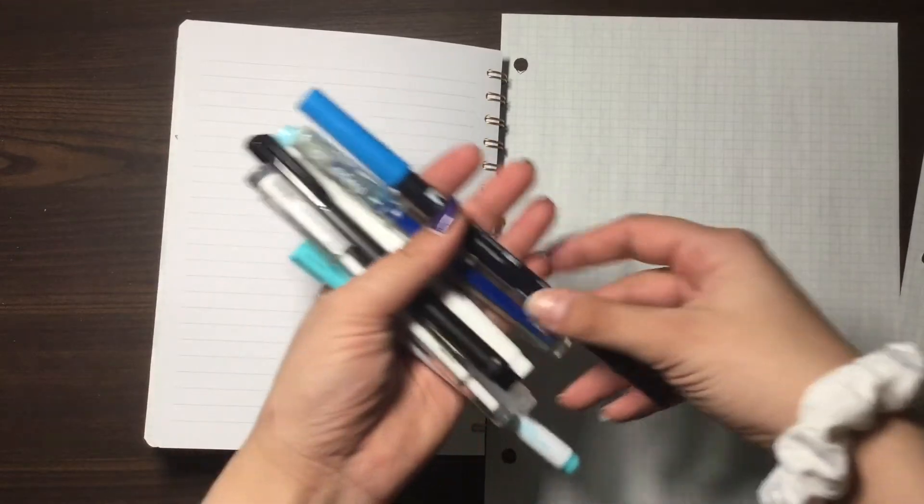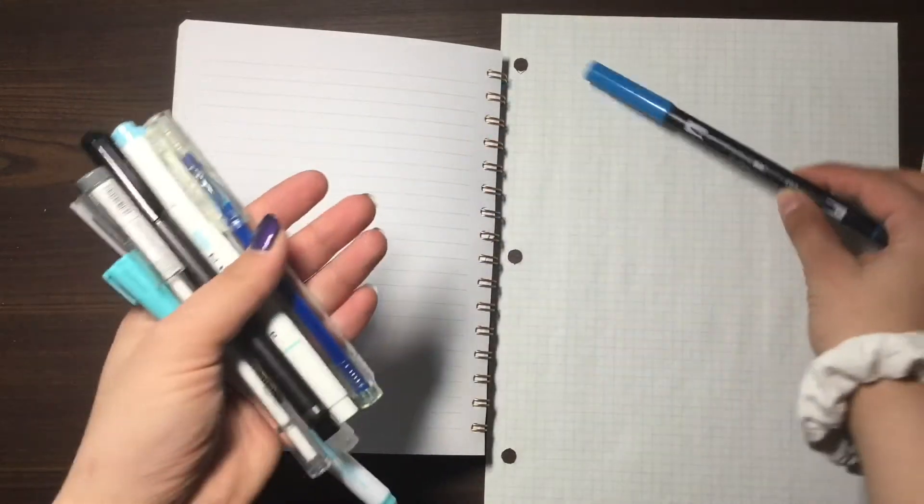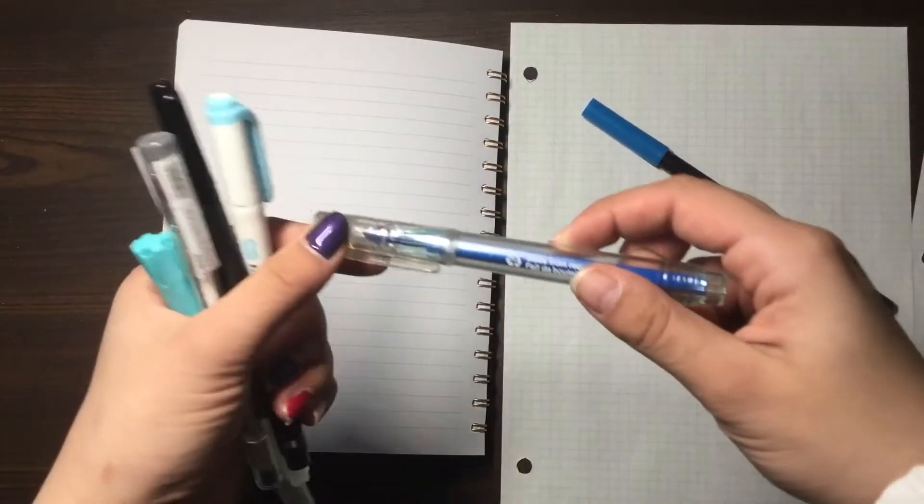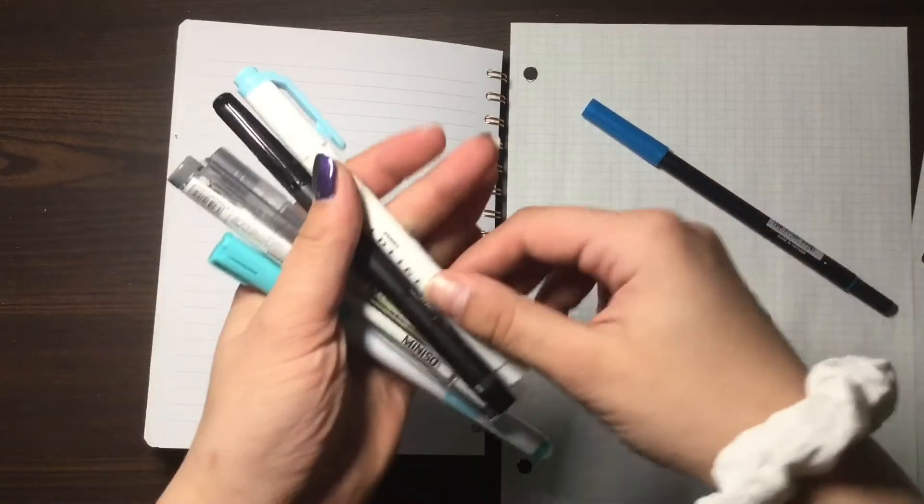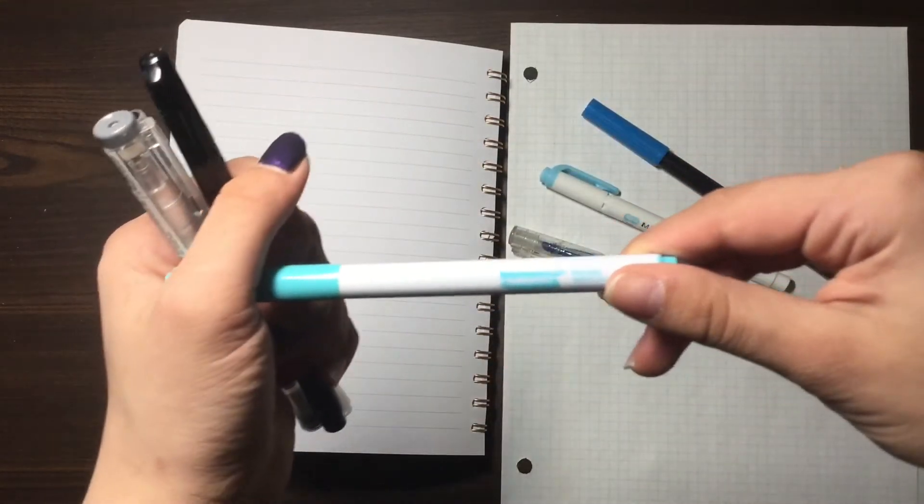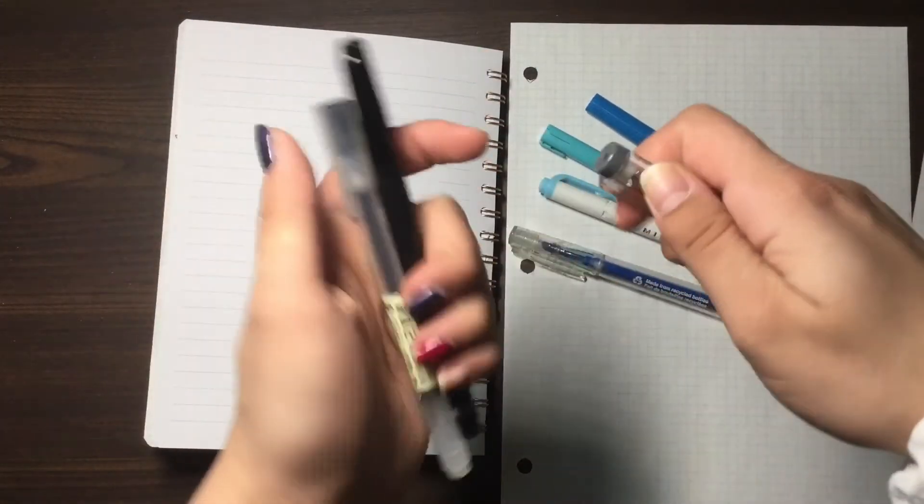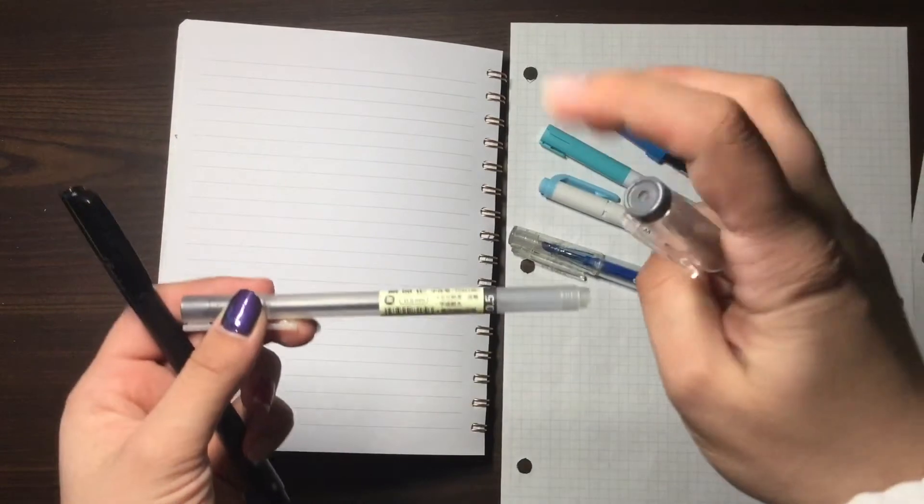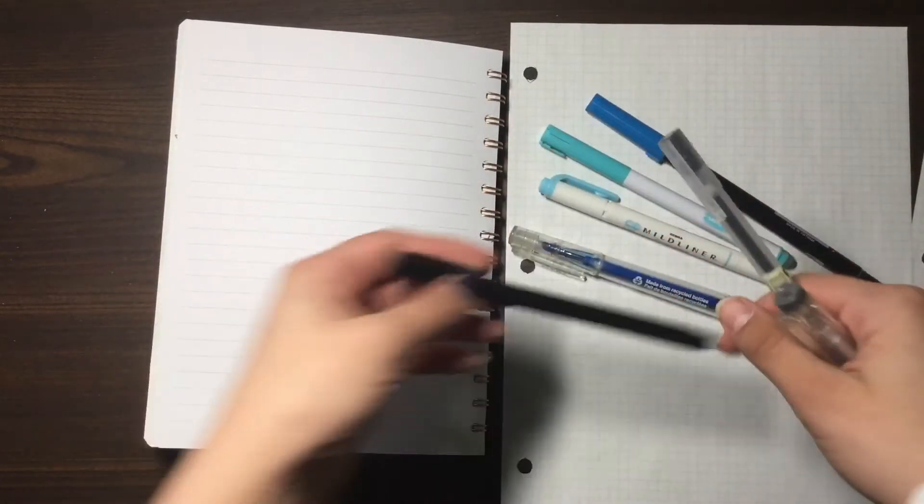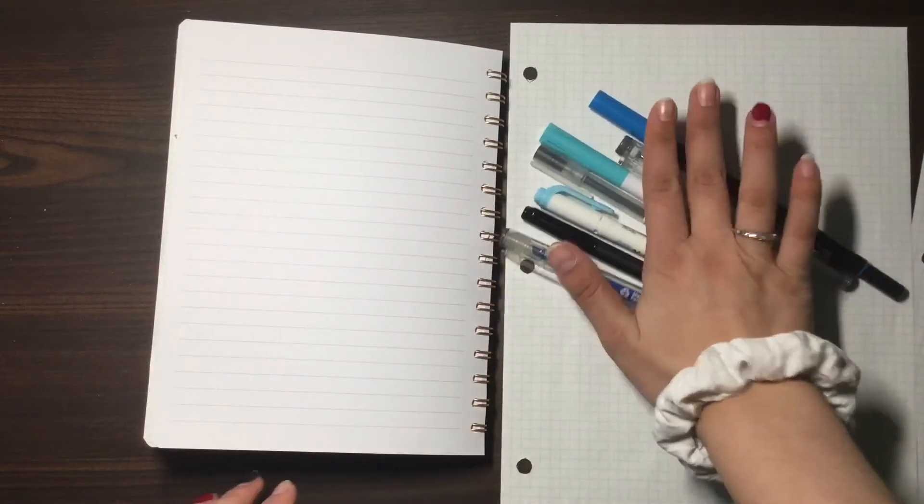So what I'm going to be using is my blue Tombow brush pen, this highlighter, my mild liner, a mini soap watercolor pen, my mini soap, my other mini soap pen, my Muji pen, and just my Sharpie pen. So without further ado, let's just get started.